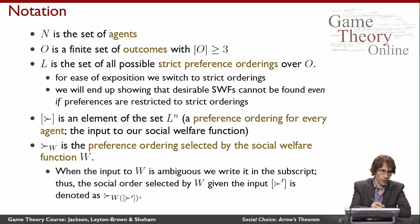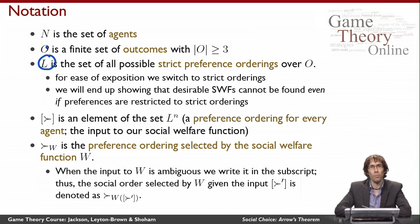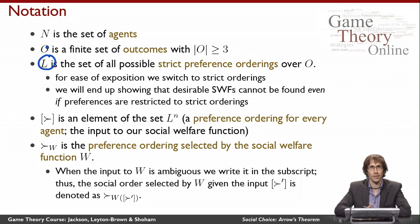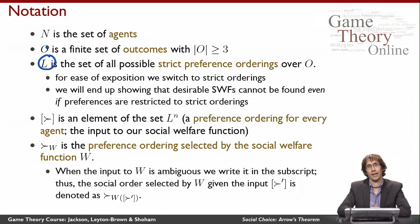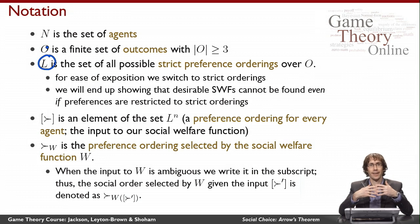I'm going to use L to denote the set of all possible strict preference orderings over o. I'm speaking here only about strict orderings, meaning that agents don't have any ties in their preferences. Arrow's theorem will tell us that any desirable social welfare function can't exist even if preferences are restricted to be strict. So this restriction to strictness is not a limiting thing — it's actually a strengthening thing. We'll see that we can't have good social welfare functions even if preferences are strict.